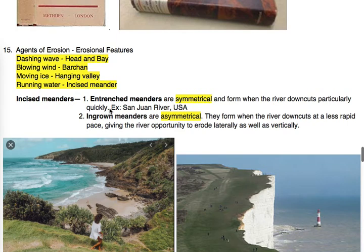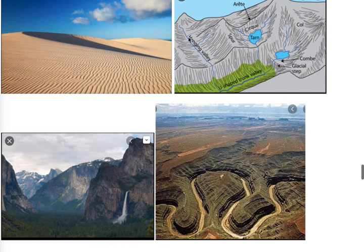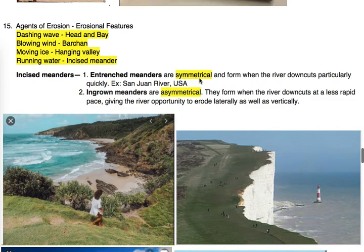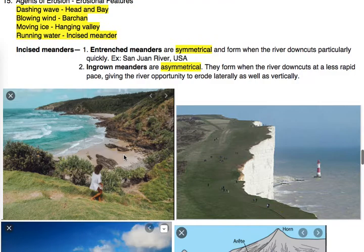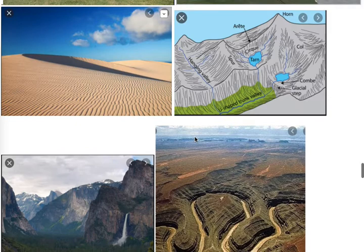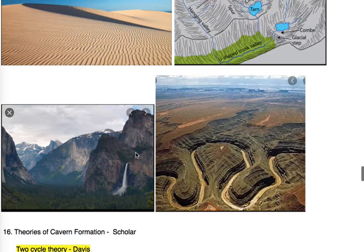Moving ice is related to hanging valley. We can see the image of a hanging valley. This part is a hanging valley — it looks like it is hanging from the adjacent part. It is caused by moving ice: as the ice moved through the area it carved the terrain, making the hanging valley. We can see a real image of a hanging valley as well.